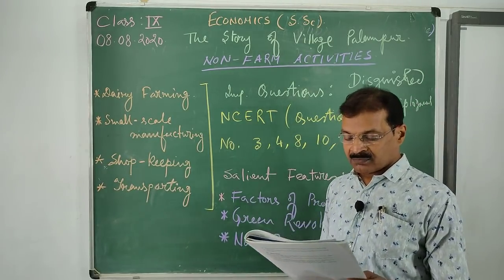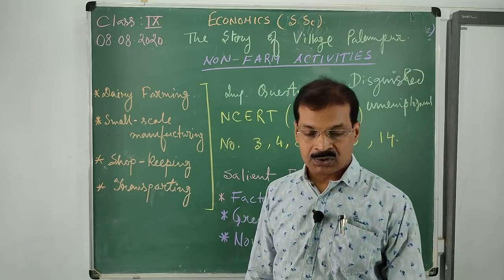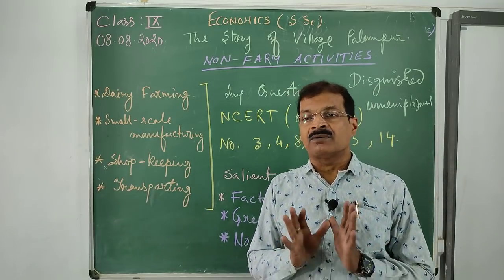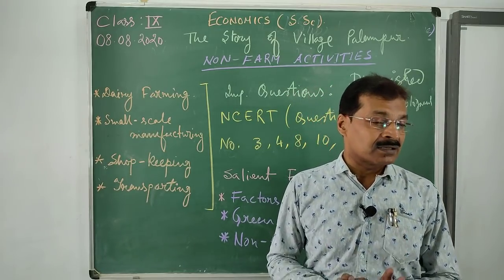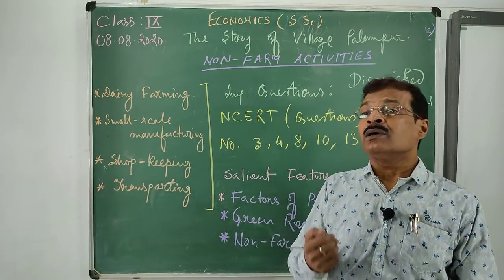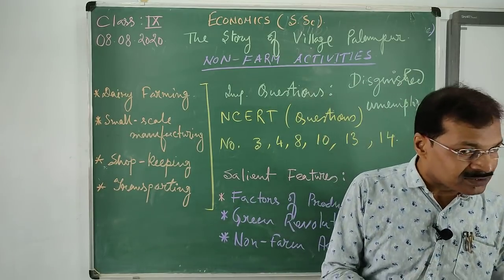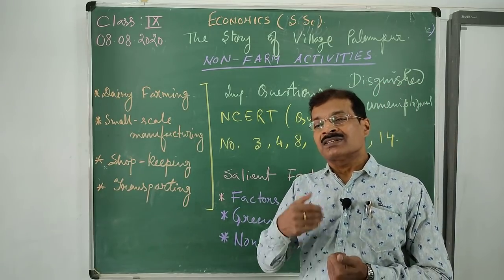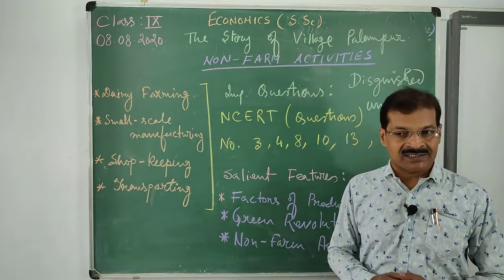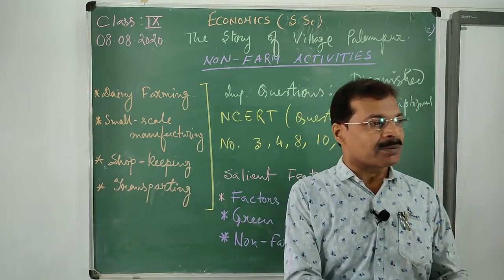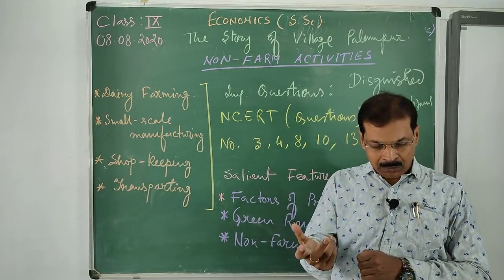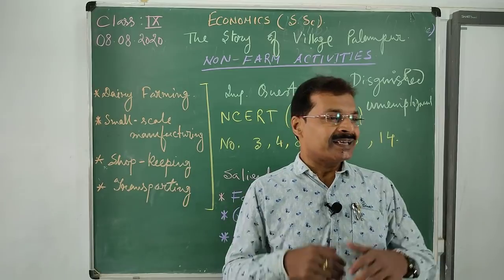Question number 10: how do medium and large farmers obtain capital for farming? How is it different from small farmers? Medium and large farmers often get funds from banks because they are producing huge amounts. As a result, they have a massive amount of marketable surplus. They sell that surplus in the market, get a large profit, keep the money in the bank as savings, and in the next year take it out as a loan.